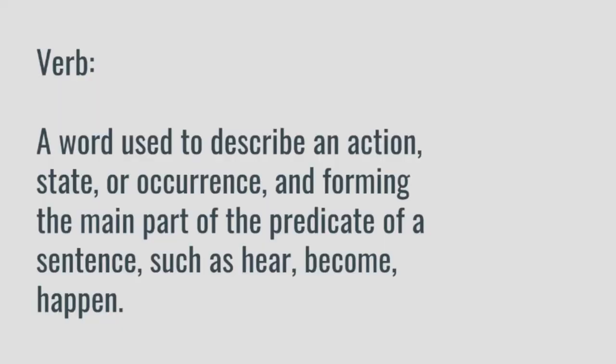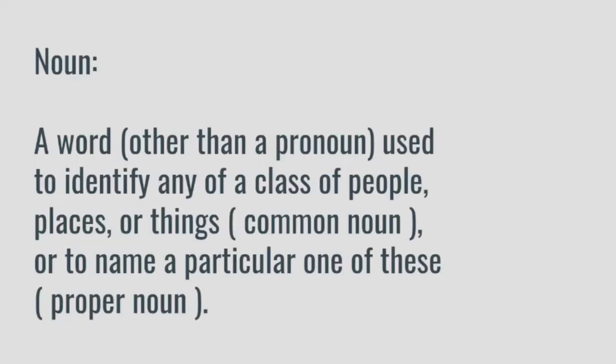So, how can we define verbs and nouns? And how can a verb be both things at once, or even more? Our classical definition of a verb is a word used to describe an action, state, or occurrence, and forming the main part of the predicate of a sentence, such as hear, become, or happen. A noun, on the other hand, is a word — other than a pronoun — used to identify any class of people, places, or things (common noun), or to name a particular one of these — proper noun.